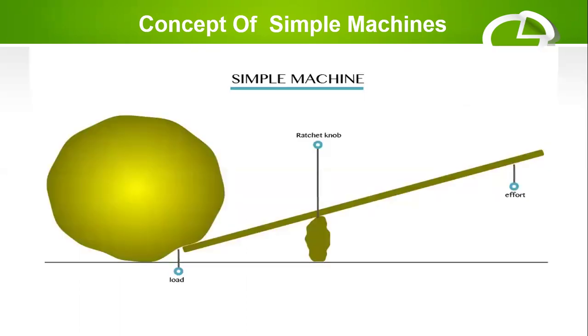Here is a simple illustration of how a simple machine works. There's a load and an effort that is applied inclined to this load just to lift this kind of load. There's a pivot known as a fulcrum. This effort is there just to lift up this load. This is a simple illustration of a simple machine.